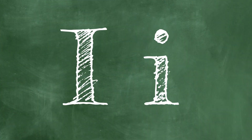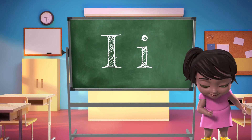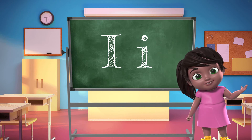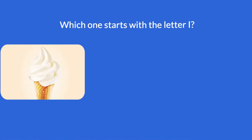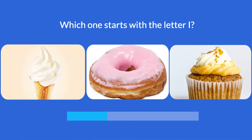The ninth letter of the alphabet is I. The first one is an uppercase I and the second one is a lowercase I. Now we are going to learn a few things that begin with the letter I. Can you help me choose the right ones? Do you know which dessert starts with the letter I? Did you guess ice cream? Great job!